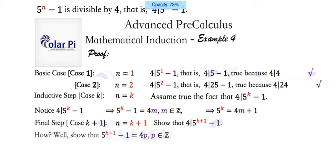Well, what we need to show, notice, is that 5 to the k plus 1 minus 1 is a multiple of 4, that it is of the form 4 times p, where p is some integer, just like m. Okay, cool. So, how do we do this? Well,